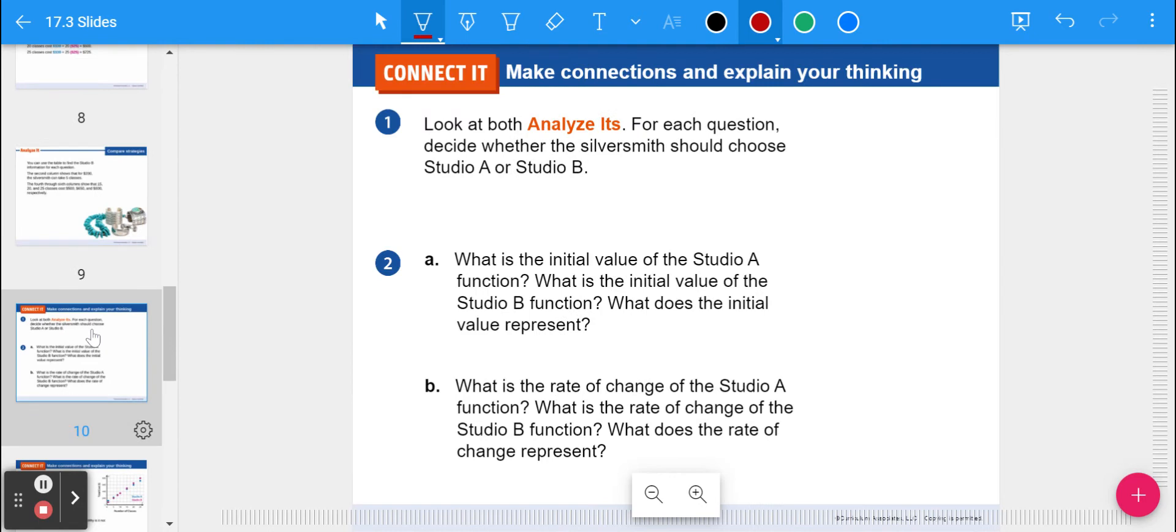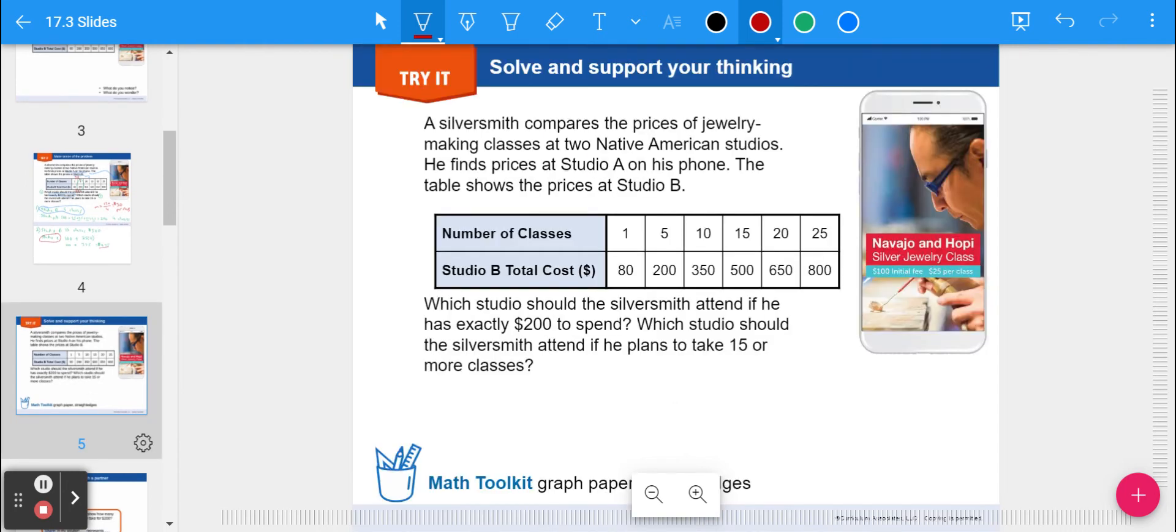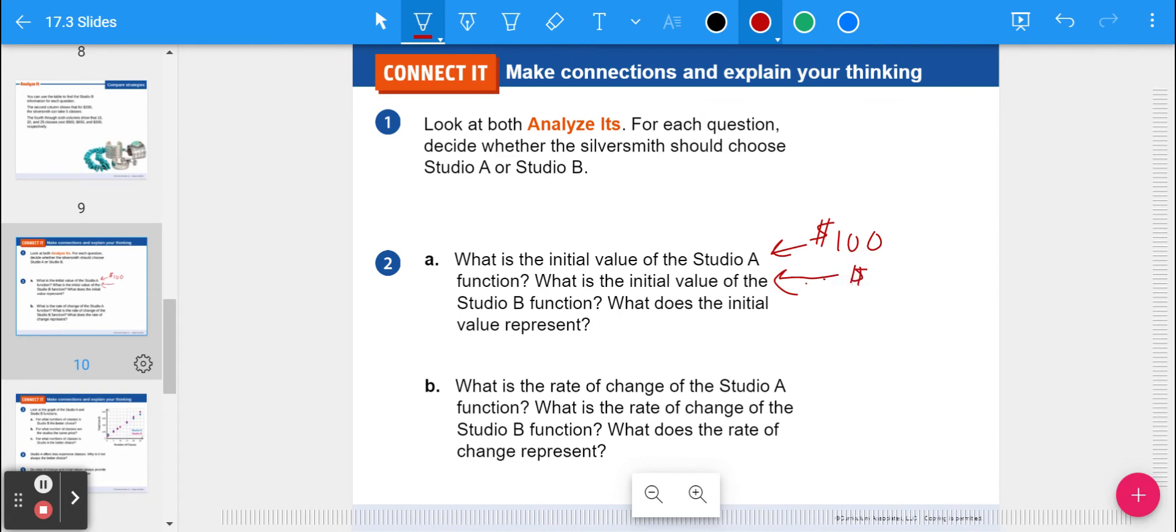So it's more expensive per class, but you start at a different initial value. That's why if you do fewer classes, it might be better to do Studio B. More classes, it's going to end up being better for Studio A. But we can compare functions at different values in time. So look at both analyses. For each question, decide whether the silversmith should choose Studio A or B. What is the initial value of Studio A? That is given as $100 fee. What is the initial value of Studio B? If I go back to zero classes, I go back $30, and I'm at $50 for zero classes. So it's a $50 initial value. What does that initial value represent? The starting cost just to join.